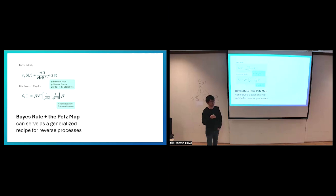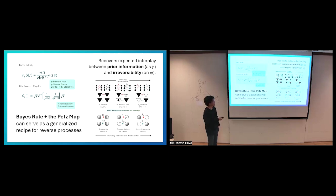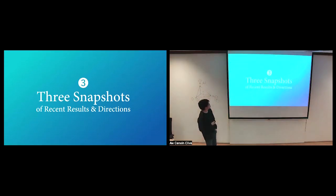As a midpoint summary: Bayes' rule and the PETS map can serve as a generalized recipe for reverse processes. It recovers nice intuitions about the role of prior information and irreversibility. The reverse processes that are out there for thermal maps and similar scenarios are also recovered by Bayesian inversion with sensible reference priors.